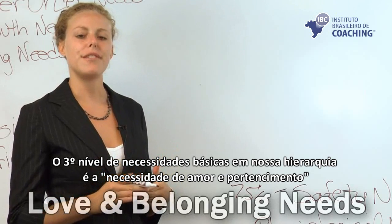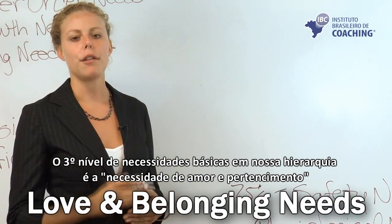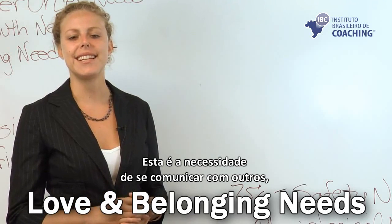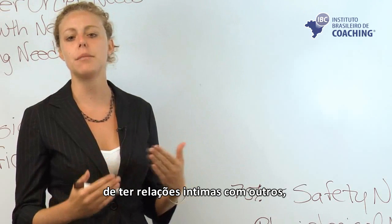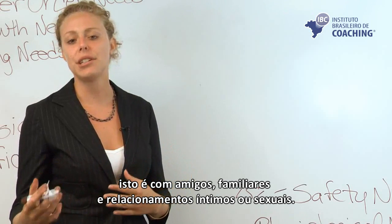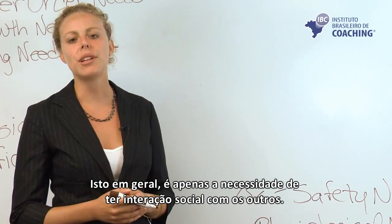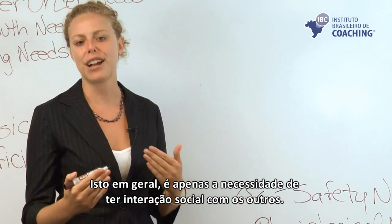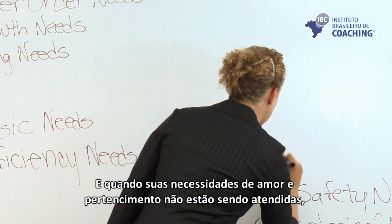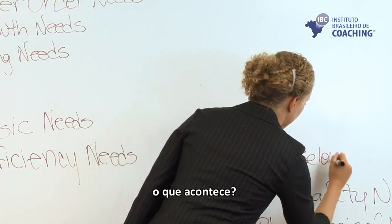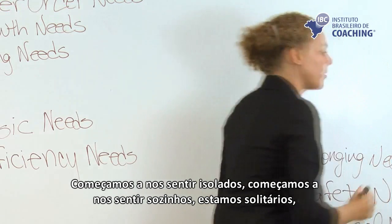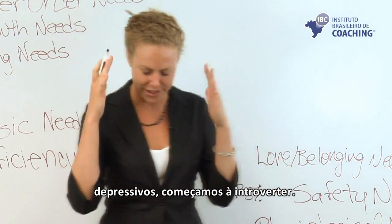The third level of basic needs is the love and belonging needs, or social needs — the need to communicate with others, to have intimate relationships, friends, family, and intimate or sexual relationships. This is generally just that need to be social and have interaction with other people. When your love and belonging needs are not being met, you start feeling isolated, alone, lonely, depressed, and you start introverting.